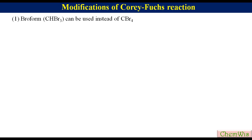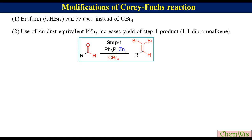Modifications of the Corey-Fuchs reaction: haloforms like bromoform can be used instead of CBr4. Use of zinc dust as an additive, equal to the moles of triphenylphosphine, increases the yield of the step one product, that is, the 1,1-dibromoolefin.